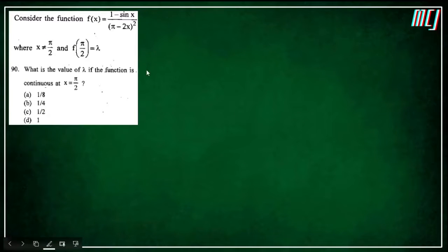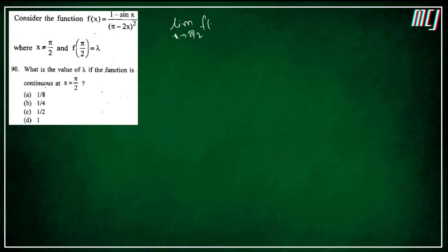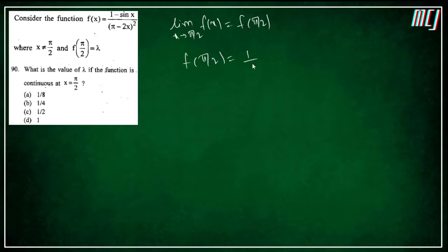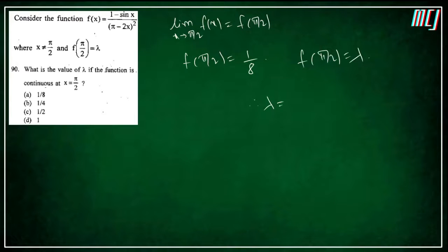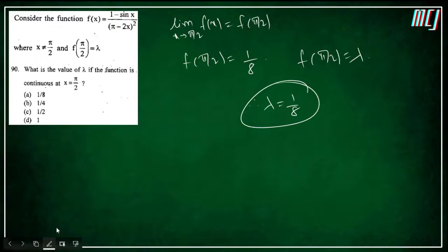Same question: for f to be continuous at x=π/2, condition है limit x→π/2 f(x) = f(π/2). Limit = 1/8 (previous question से). Given f(π/2) = λ, therefore λ = 1/8. Option A is the correct answer.